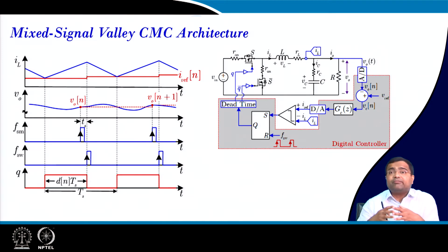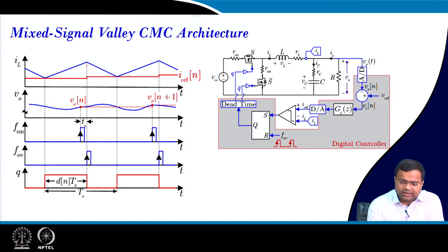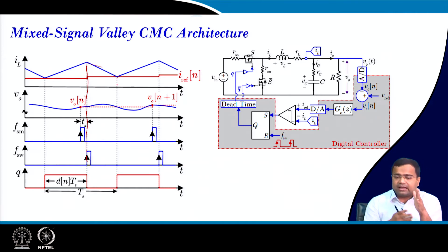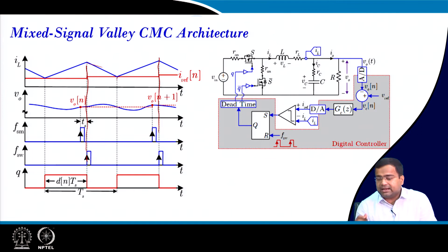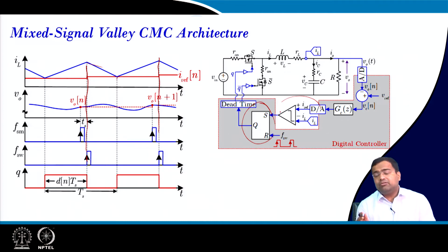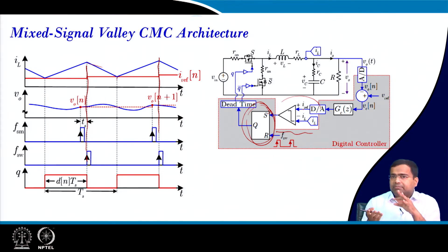Mixed signal current mode control can also have a valley current mode architecture because it is a leading edge architecture. In leading edge, when the switching frequency clock comes the switch turns off, and the switch turns on when the inductor current hits the valley current, then continues until the next clock comes. In this method we have to generate the valley current reference.